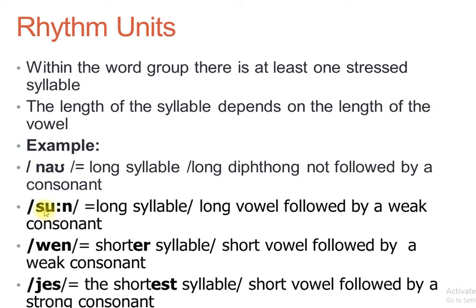The next example is 'soon.' This is also one syllable and it is considered a long syllable — because it has a long vowel. And this long vowel is followed by a weak consonant. Consonants can be voiced or voiceless. Voiced consonants are weak, voiceless consonants are strong. So if the consonant that follows the vowel is a voiced (weak) consonant, then the vowel is longer.